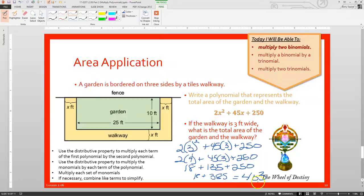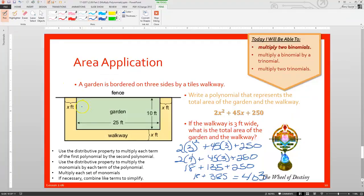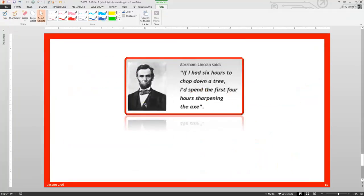So, the total area of the garden and the walkway, if the walkway is 3 feet wide, then our total area is 403 square feet. Again, I know I went through that fast. I didn't really explain all my thinking, but I think I explained most of it, and if you have questions, you know how to reach me. And I think this is the last example. Yeah, absolutely it is.